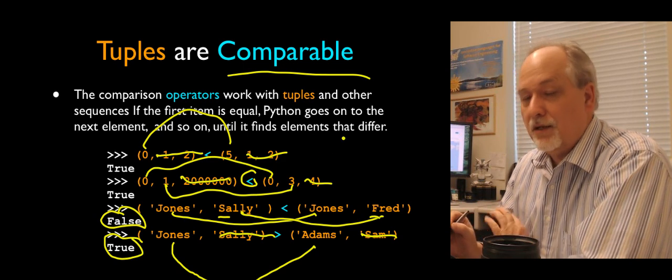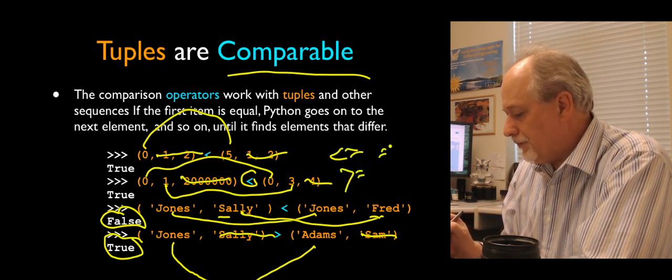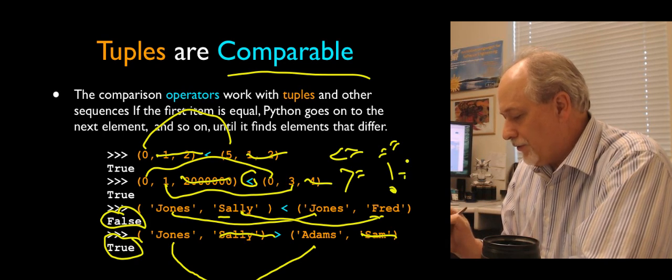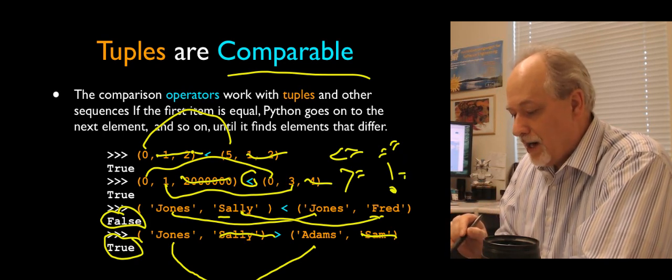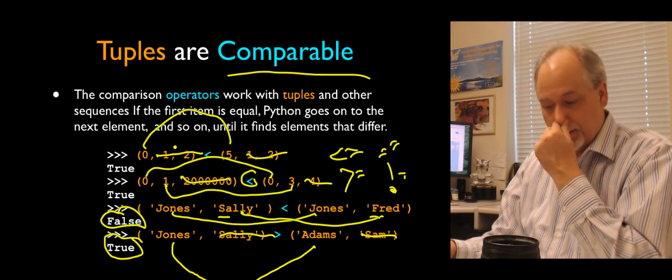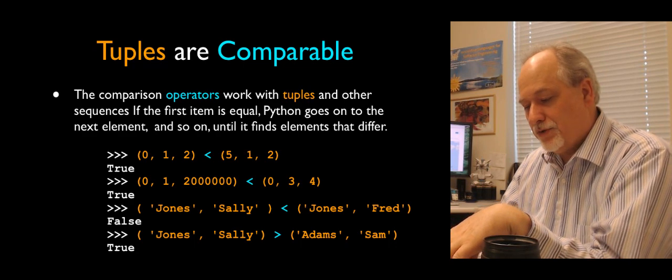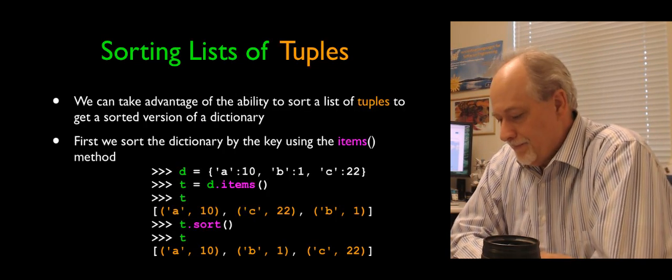So these are comparable, which means we can use the less than, less than or equal to, greater than or equal to, equal to, or not equal to. So we can use these operators on whole tuples. Now this turns out to be quite nice. Because things that can be compared can also be sorted.